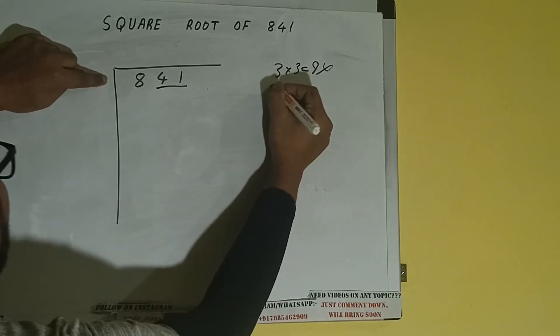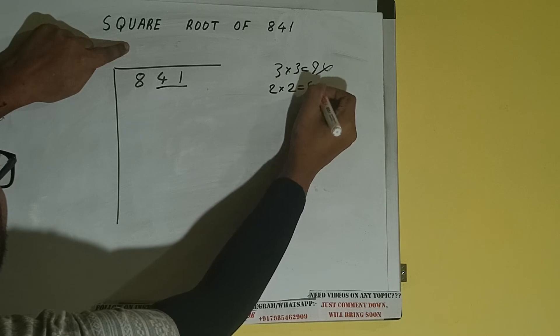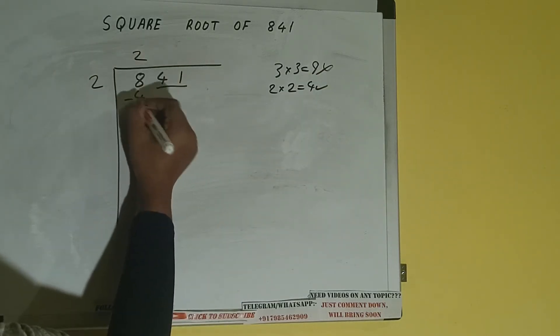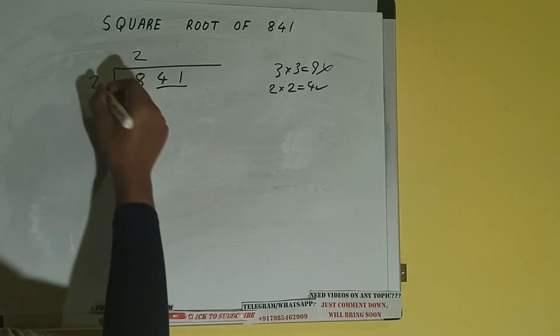If we write 2 here and 2 here it will be 4 which is good to take. So 2 here and 2 here, 4 subtract, 4 will be left.